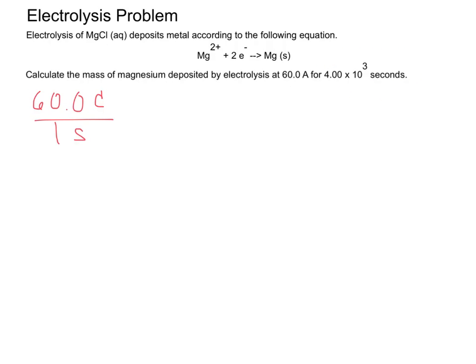So we can go from seconds to coulombs. But what we're looking for is mass of magnesium, grams of magnesium. So just thinking through our process, we need grams of magnesium. So that means somewhere along the line, we're going to need to find the moles of magnesium, and you know the conversion factor to go between grams and moles, I assume, since you're in Chem 2.